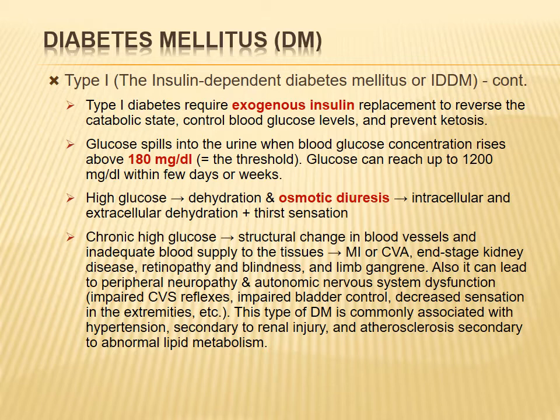The insulin used today is human insulin, unlike 30–40 years ago when bovine or porcine insulin was used. Now that the structure of human insulin and its gene are known, factories inject bacteria with the required gene and the bacteria produce human recombinant insulin. Because insulin is a polypeptide, it cannot be taken orally — it must be given by injection.